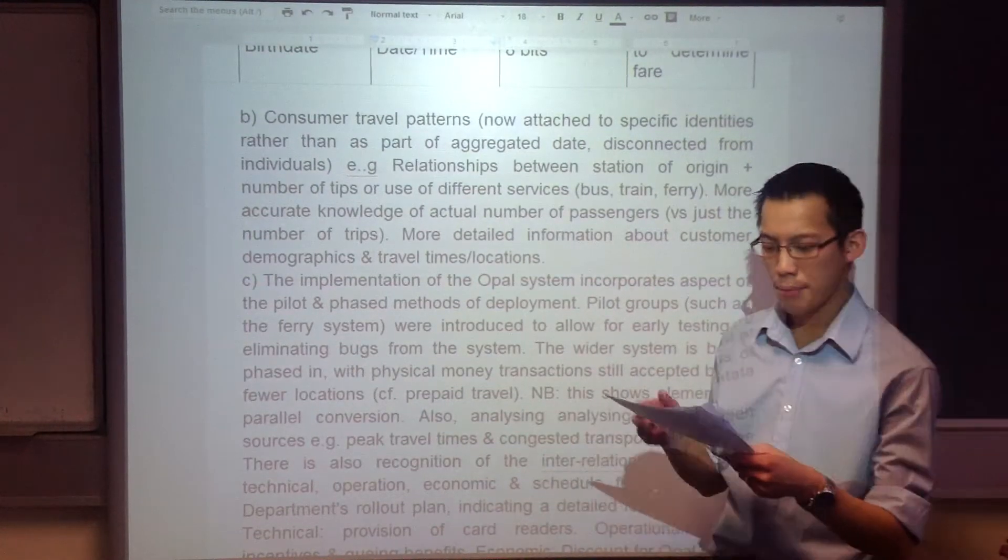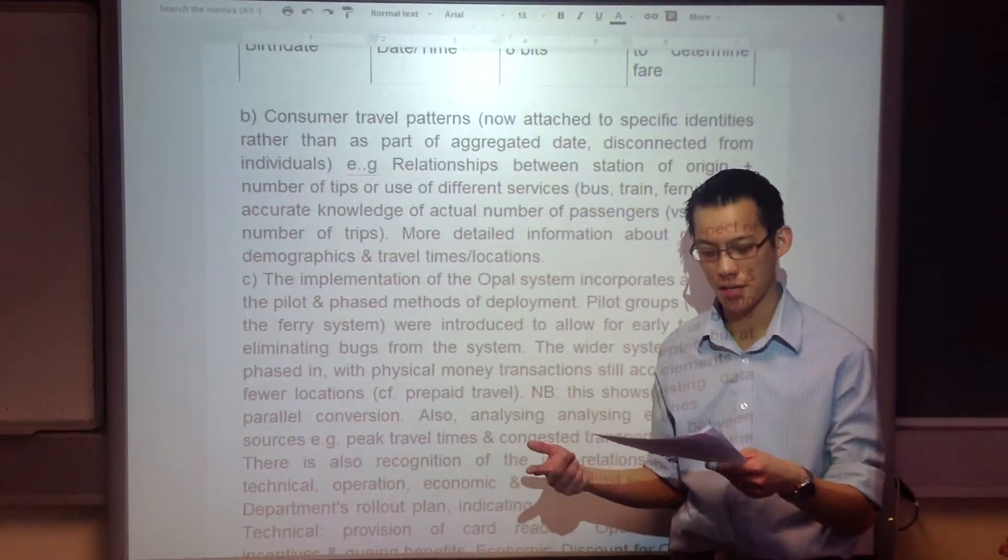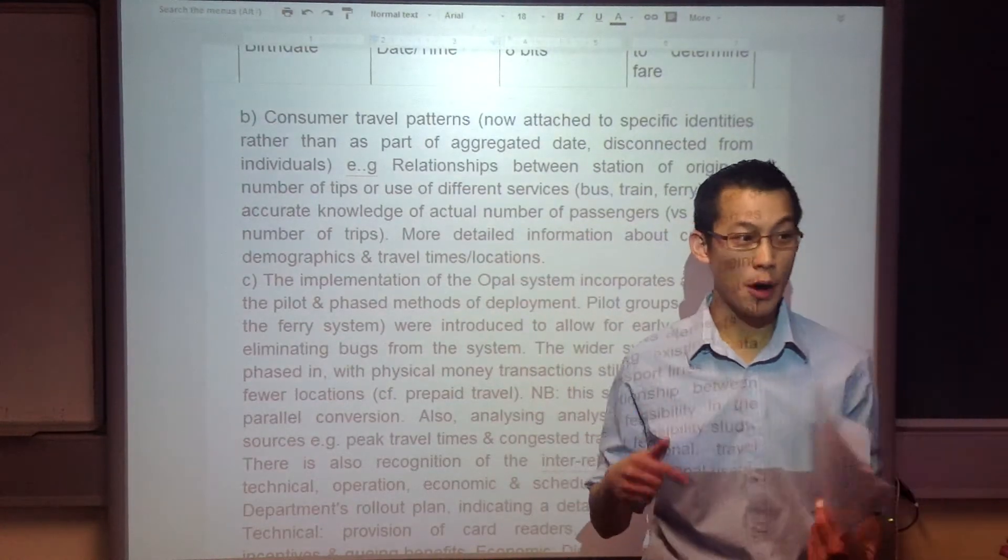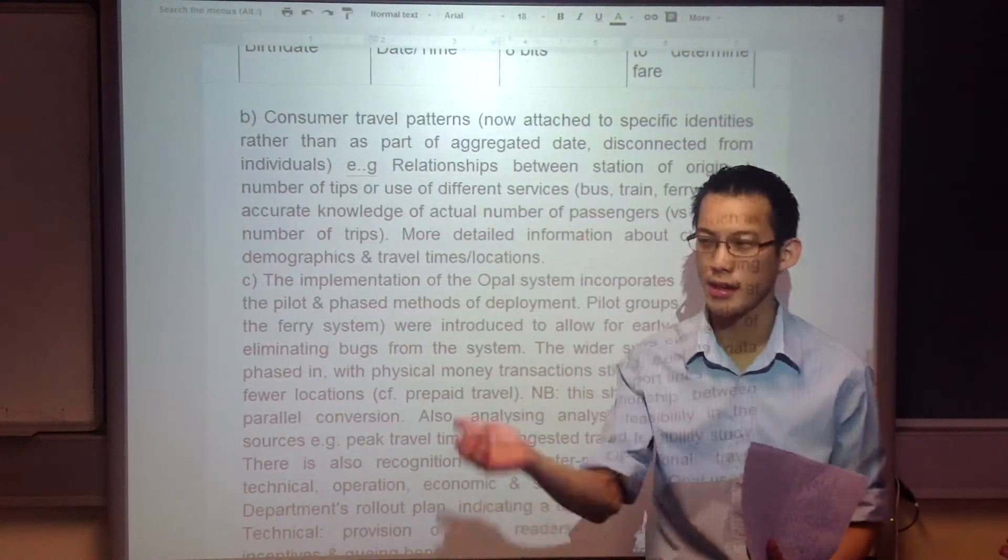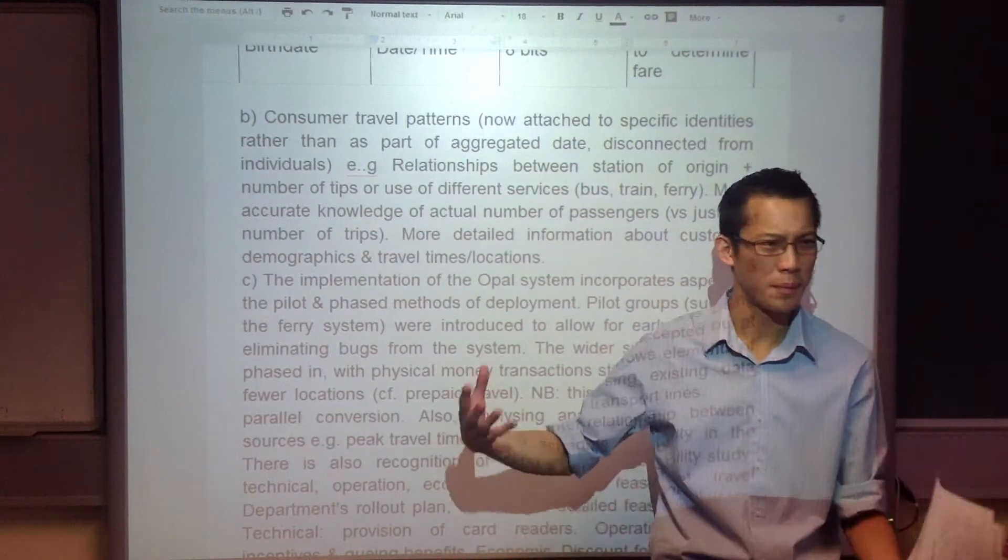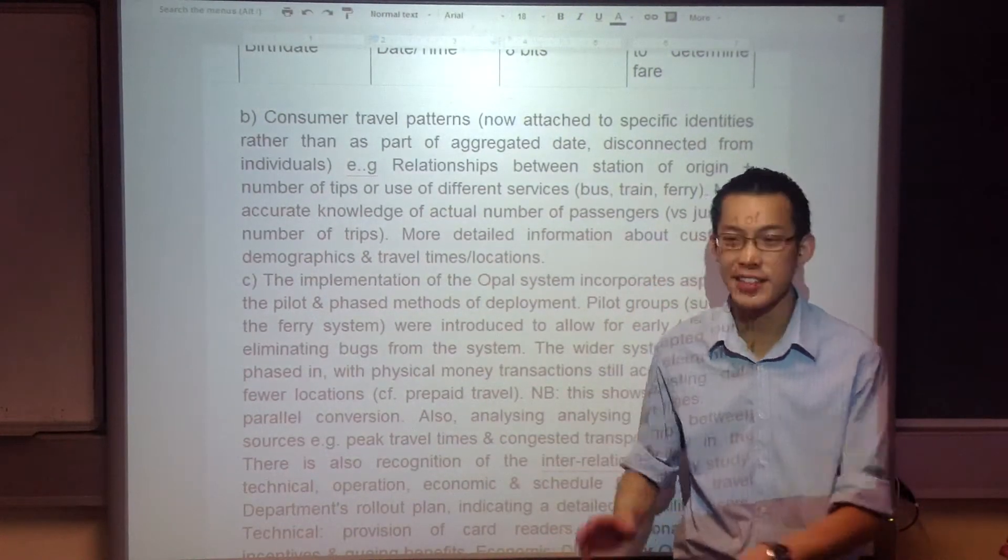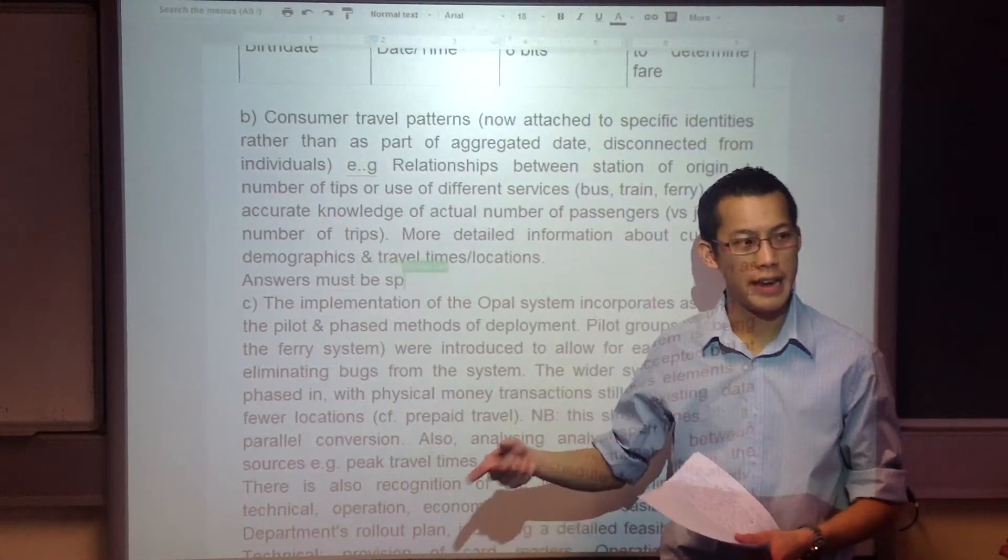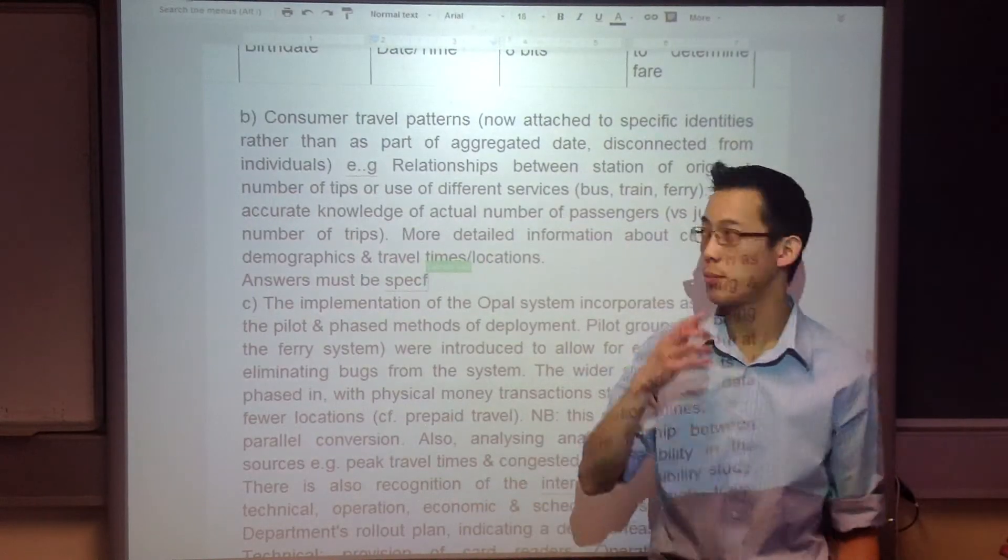So if you said here, they'll be able to identify peak times and the most busy stations and people can open up shops, people know all of that already, has nothing to do with Opal. What are things that we don't know now which we do know once you've got Opal?